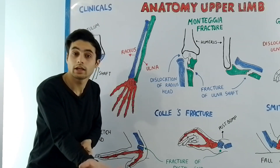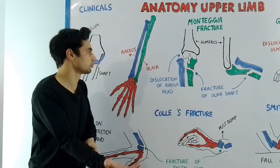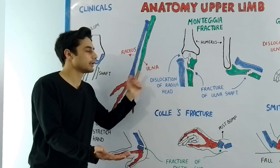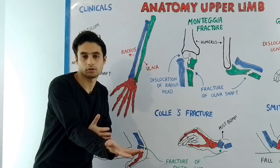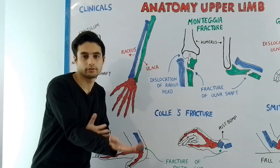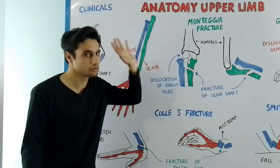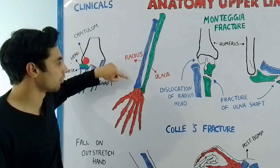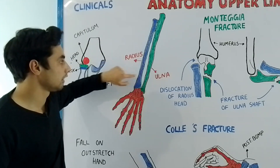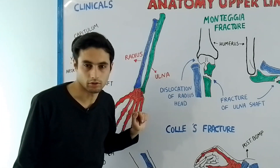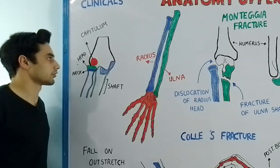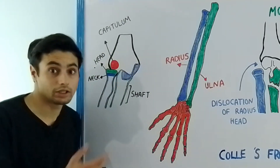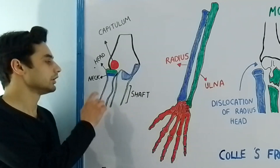The forearm consists of two bones: the radius and the ulna. The radius is present on the lateral side and the ulna is present on the medial side. The bone is divided into three parts: the proximal part, the body or shaft, and the distal extremity. Have a look at this diagram — the humerus bone is making the elbow joint with the radius and ulna bone.